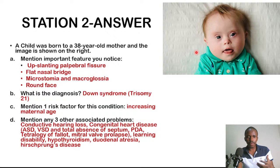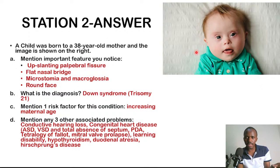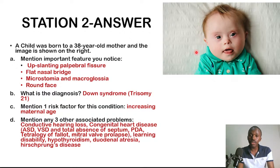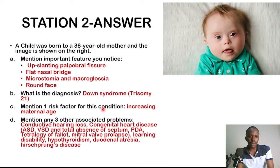The majority of Down syndrome cases result from meiotic non-disjunction, where chromosomes fail to separate so that the oocyte and spermatozoa combine to give three chromosomes at position 21 instead of two. Another risk factor is a mother who has previously had a child with Down syndrome.